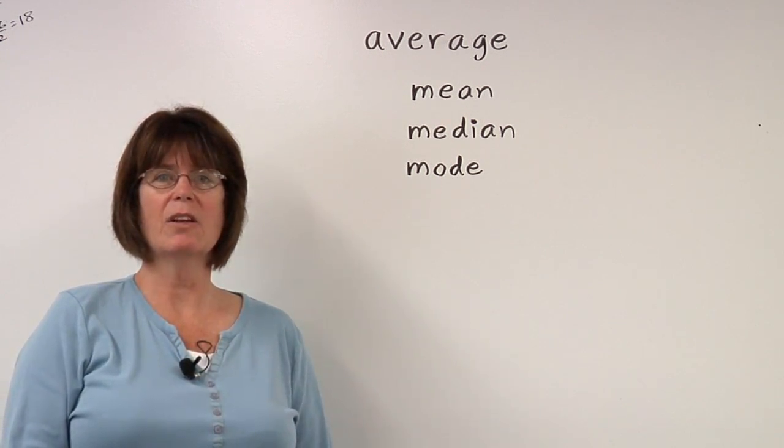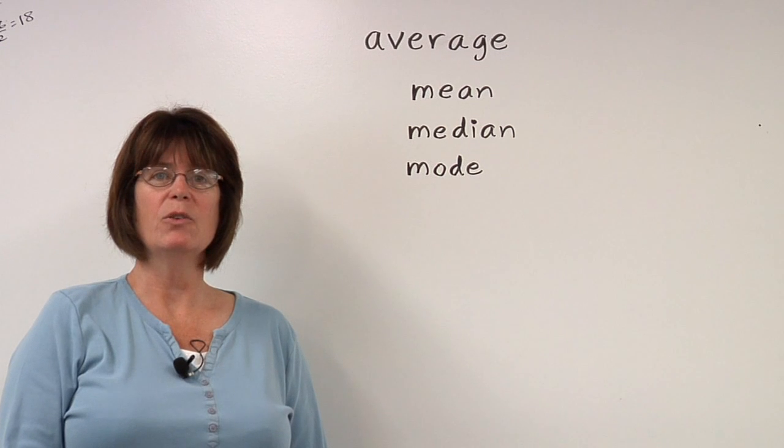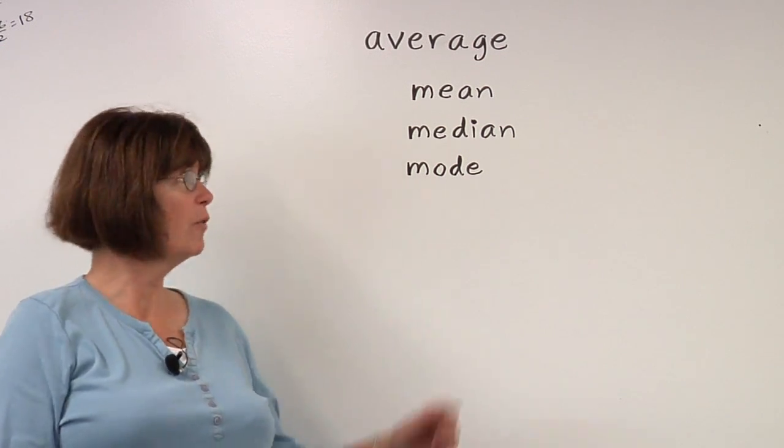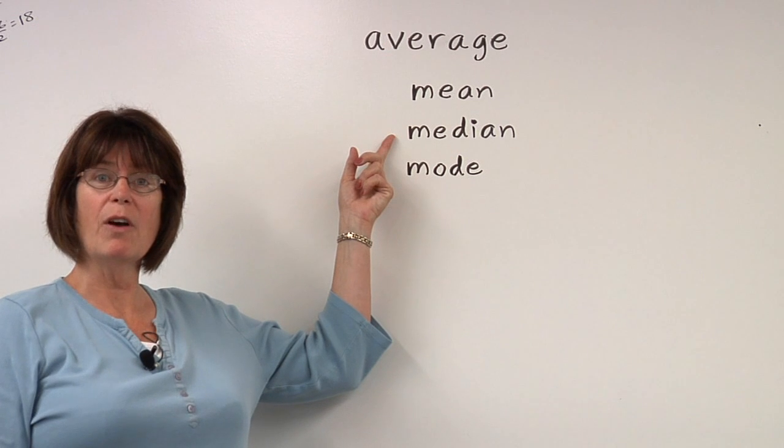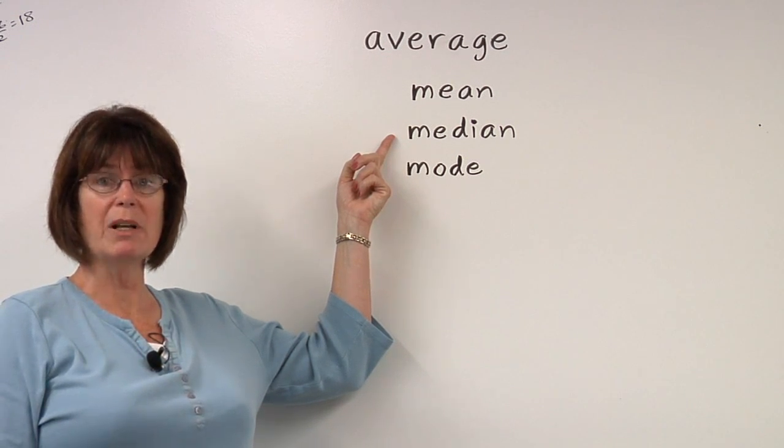So if you had the heights of some people and you listed them from the shortest to the tallest, to find the median, you just find the value that is in the middle of the group.